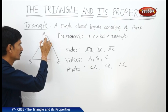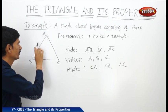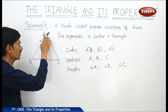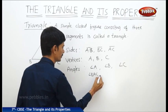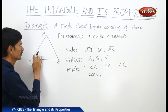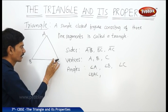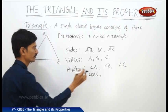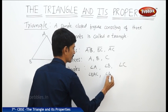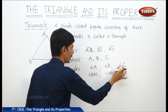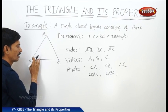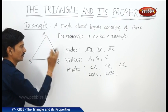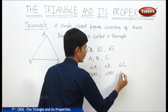The angles are angle A, angle B, and angle C. Angle A can also be written as angle BAC or angle CAB. Angle B means angle ABC or angle CBA. And angle C is the same as angle ACB or angle BCA.